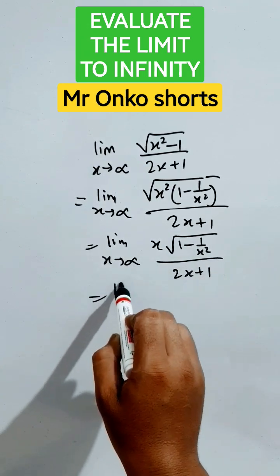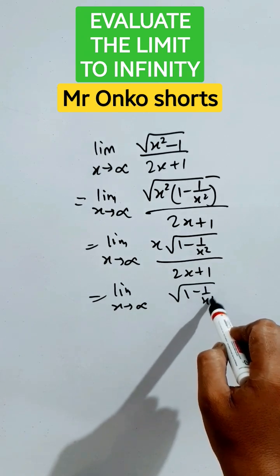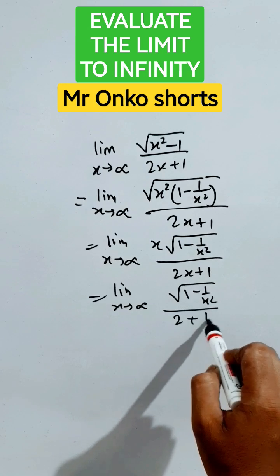Divide both sides with x, that is x tends to infinity, root over of 1 by 1 minus x square by 2 plus 1 by x.